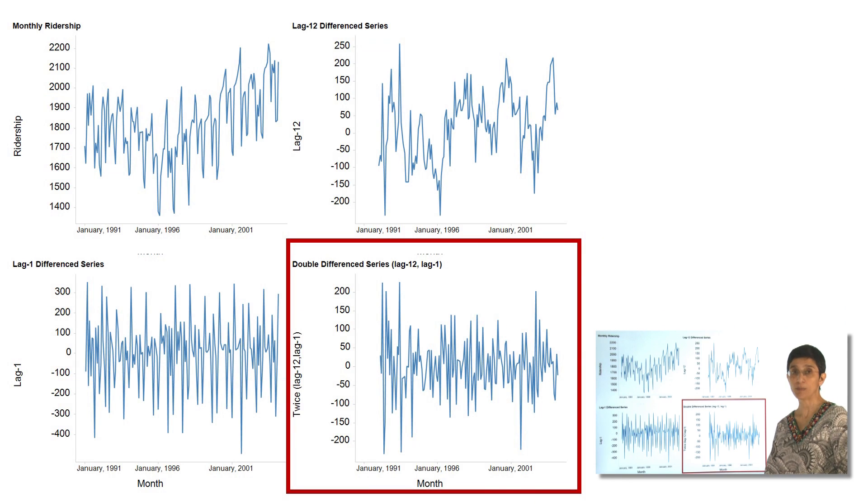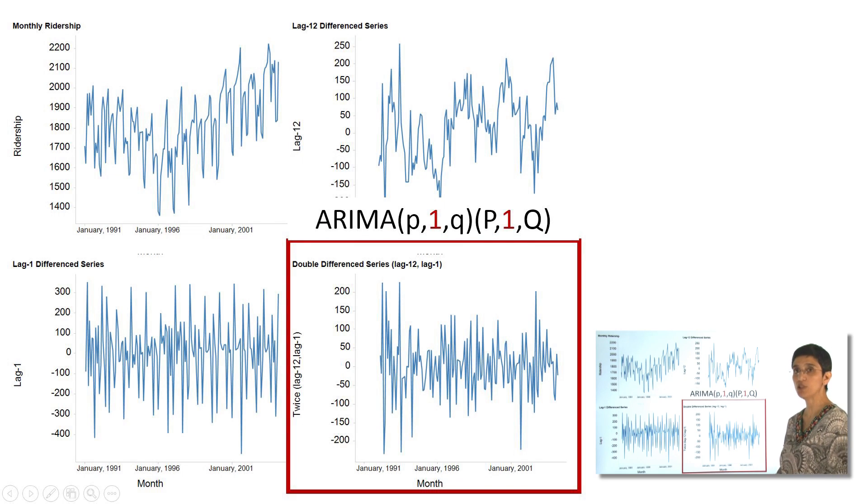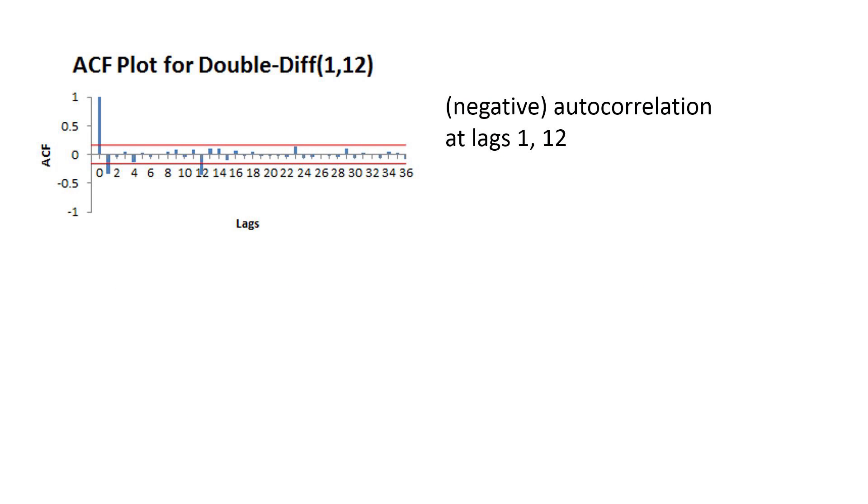Recall that earlier we talked about using differencing to remove the seasonality and the trend. We use lag 1 to remove the trend, lag 12 to remove seasonality, and when we double-differenced with both, we got a series with no trend and no seasonality. This is similar to what we would do when running an ARIMA model with D equals 1 and capital D equals 1. Here we plotted the autocorrelation chart of the difference series, and we see negative autocorrelations at lags 1 and 12.